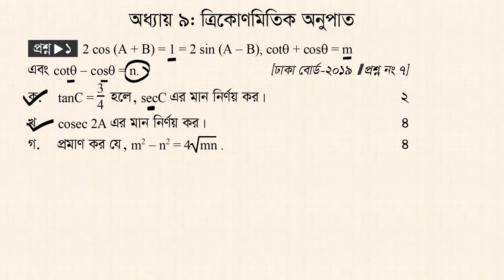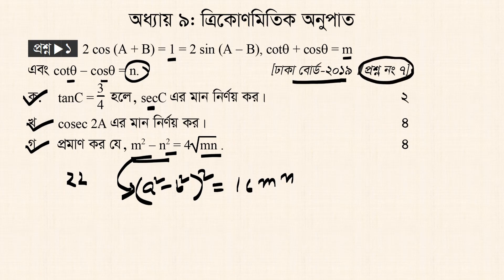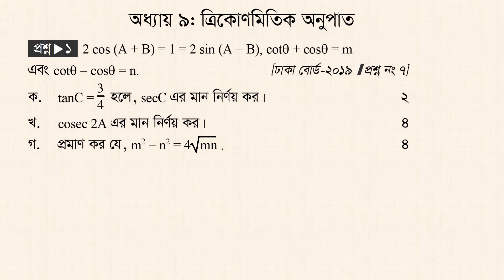Gujarati explanation of the trigonometric setup. Let us observe: tan c equals 3 by 4.